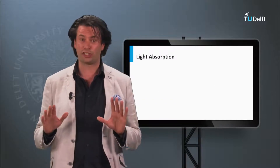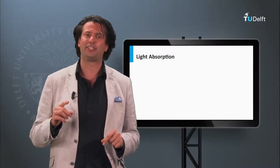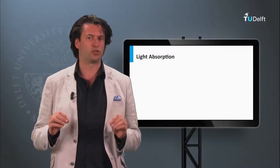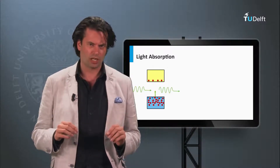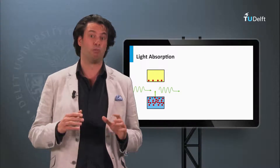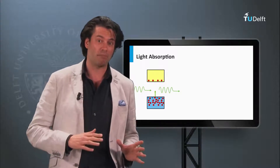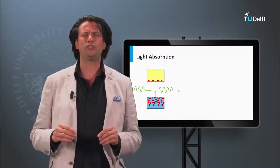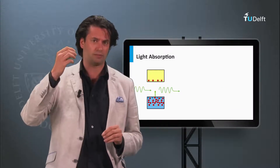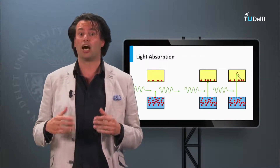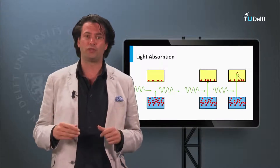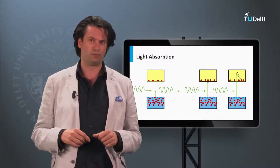Let's consider a single junction solar cell in which the absorber layer is a material with a certain band gap energy. We know that when the energy of a photon is smaller than the band gap, it is lacking the energy to excite an electron to the conduction band. When the energy is larger than the band gap, absorption of the photon results in a mobile electron and hole.